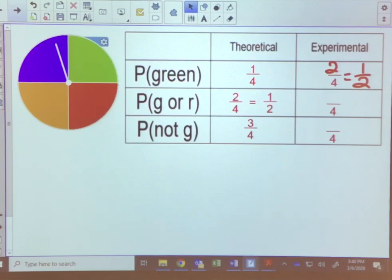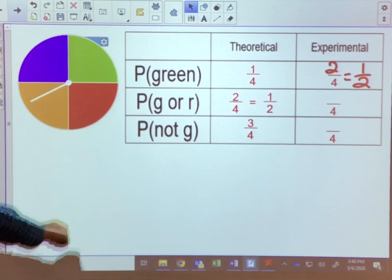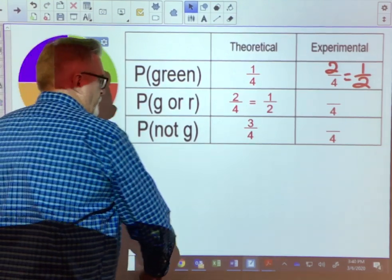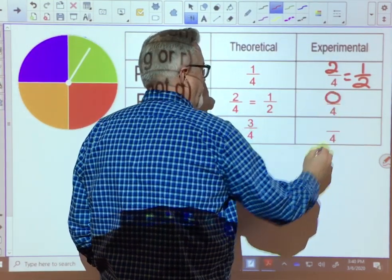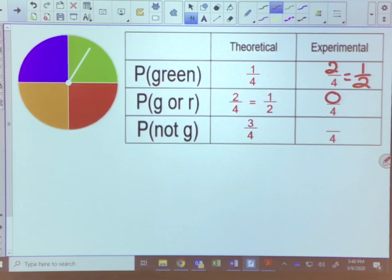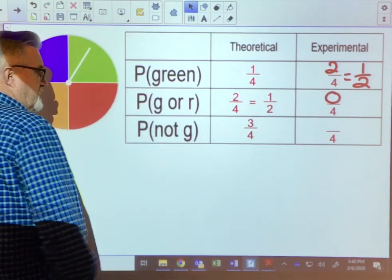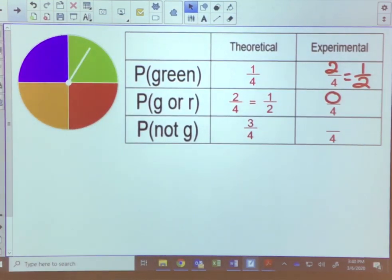Got purple again. Third try we've got an orange. Fourth try we get a green. We busted on that one. Our experimental probability was zero fourths, or zero. It did not happen.